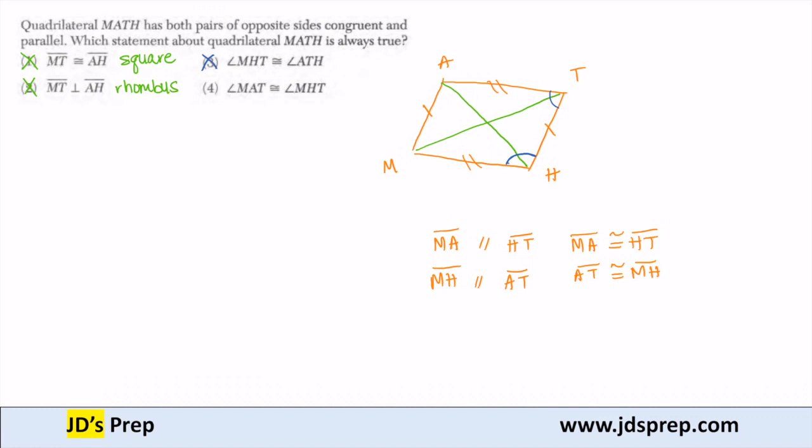The last option is that angle MAT, which is here, is congruent to MHT. And so now we're looking at opposite angles. And for every quadrilateral where both pairs of opposite sides are congruent and parallel, the opposite angles are congruent. So four is correct. Because opposite angles are congruent in this quadrilateral MATH.